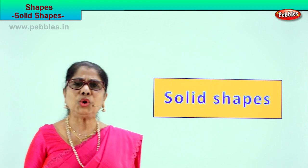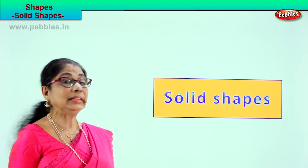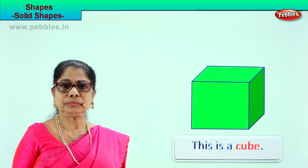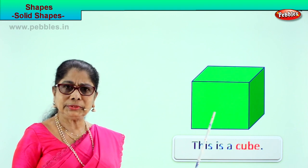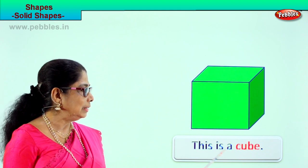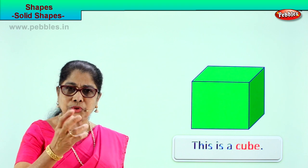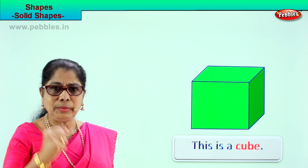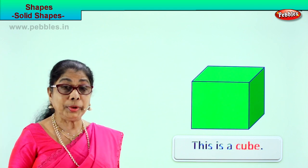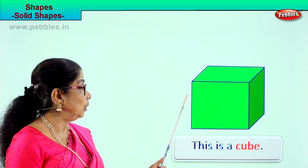Let's look at our first solid shape. See what we have here — you've seen cardboard boxes, don't they look like this? This is a cube. Have you played with the Rubik's cube? The cube is solid.